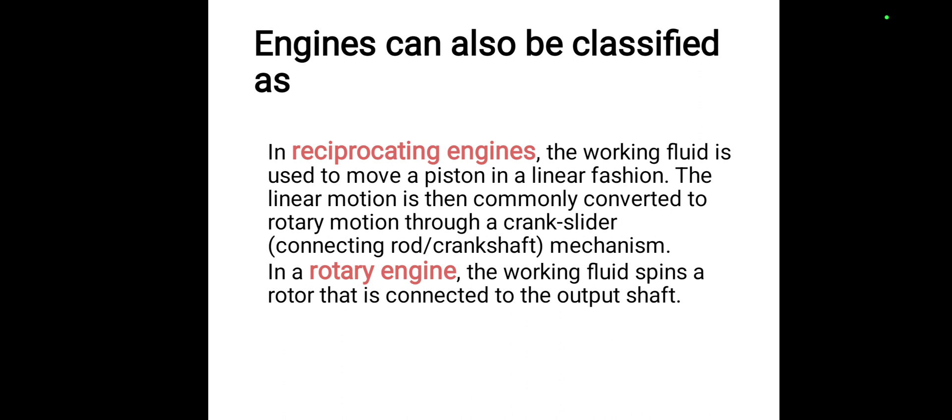There are two types: reciprocating engines and rotary engines. Reciprocating engines have a fixed cylinder and moving piston. The piston moves in a linear fashion inside the cylinder. This linear motion is converted to rotary motion. The rotary engine produces a rotating motion. The crank and slider mechanism converts linear piston motion to rotary motion.